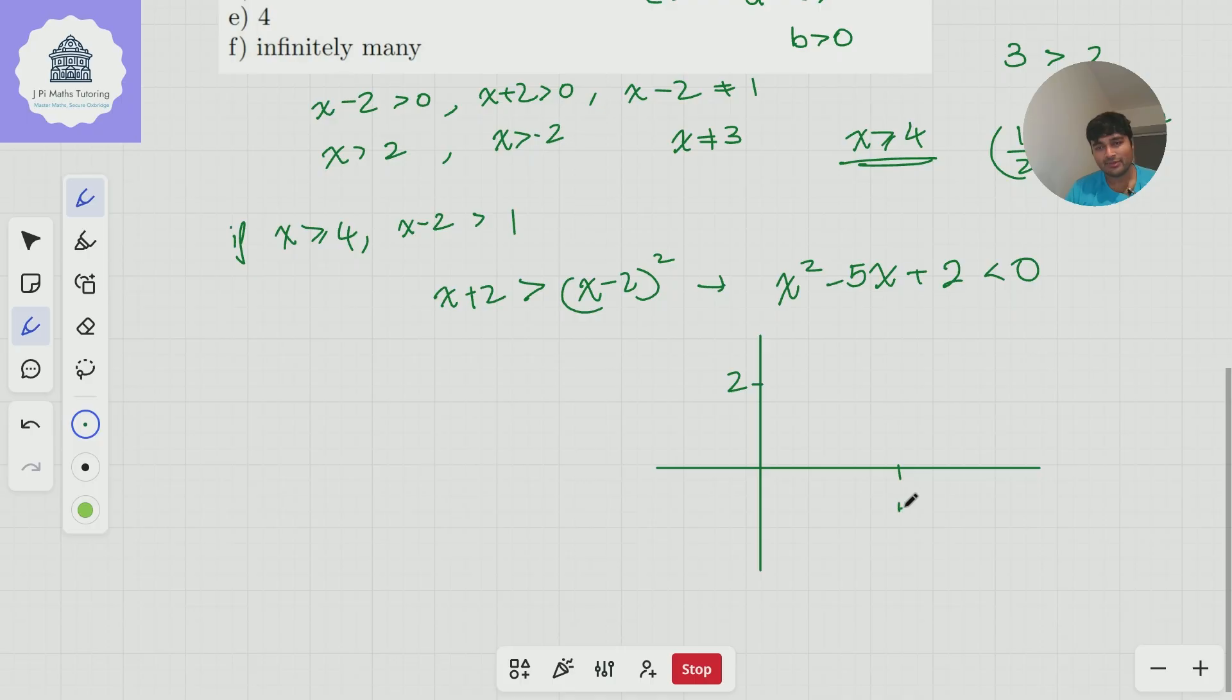It's got a turning point at 5 over 2. And let's just quickly see how many roots it has. B squared minus 4ac, 25 minus 8, definitely a positive number. So it's got two real roots. So it must look something like that. And I'm interested in this guy here. Where is that guy?